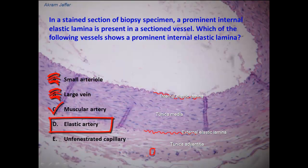An elastic artery, as the name indicates, has an excess of elastic laminae. The tunica media is predominantly occupied by elastic laminae, therefore you cannot distinguish a separate external or internal elastic lamina. The whole thickness of the tunica media contains elastic fibers with no distinguishable laminae, as we can see in the muscular artery.